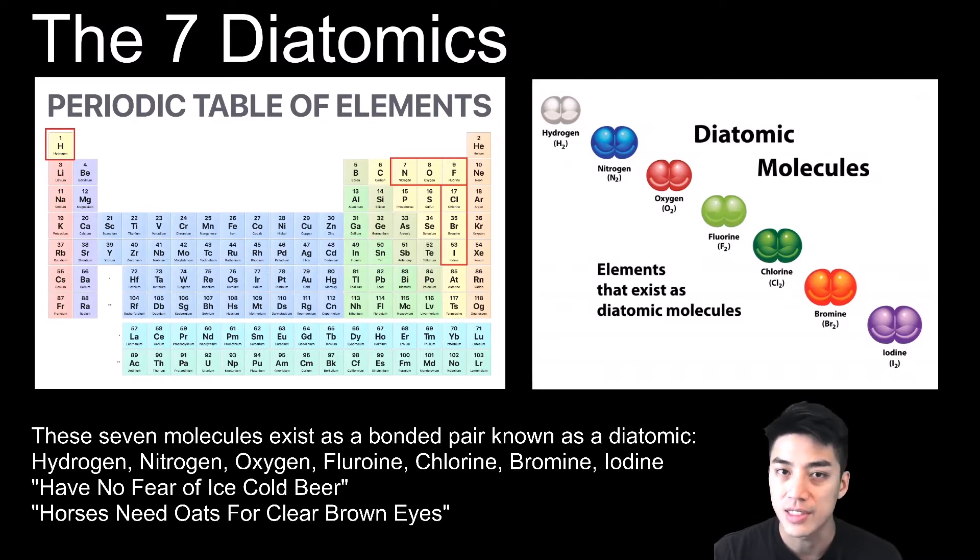You need to understand that there are seven diatomics on the periodic table. These diatomics exist as bonded pairs in nature, which means they are never found alone as a single atom. They're always found as a bonded pair. The seven diatomics are hydrogen, nitrogen, oxygen, fluorine, chlorine, bromine, and iodine: H2, N2, O2, F2, Cl2, Br2, and I2. There's a clever mnemonic device that can help you remember these diatomics better. The first is 'Have No Fear Of Ice Cold Beer.' The other one is 'Horses Need Oats For Clear Brown Eyes.'